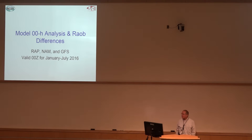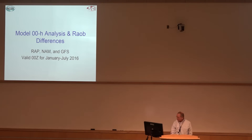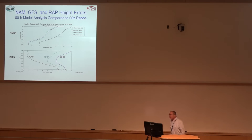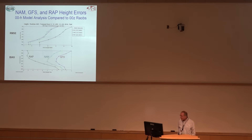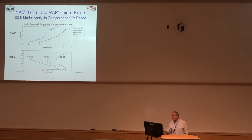Let's look at some zero-hour analysis and radiosonde differences for the RAP, the NAM, and the GFS — three operational models — for the first seven months of last year. Looking at model analysis compared to RAOBs at zero-hour for height errors, the root mean square errors show that once you get above 700 millibars, we're probably talking about 8 to 10 meters or more difference between the radiosonde and what the model says. And they all tend to have a negative height bias averaging around 3 to 5 meters.